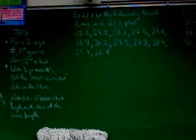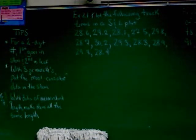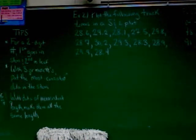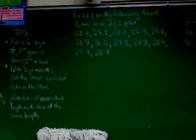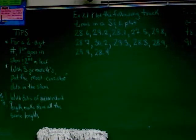Okay, so let's go to example two. Example two, we're supposed to plot the following track times on a stem and leaf plot. It doesn't say ordered or unordered, so we don't have to worry about that. The times are: 28.6, 29.2, 28.1, 27.5, 29.8, 28.7, 30.2, 29.3, 28.3, 28.9, 29.9, 28.4.